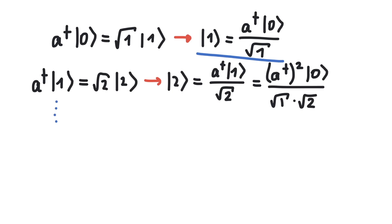So this means we can write our state |m⟩, the m-th excited state in the harmonic oscillator, as the creation operator applied m times on the ground state, divided by √(m!). And this is a very useful expression.